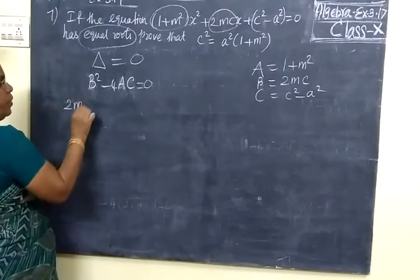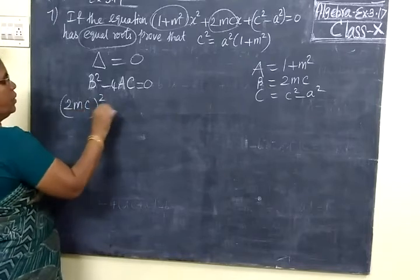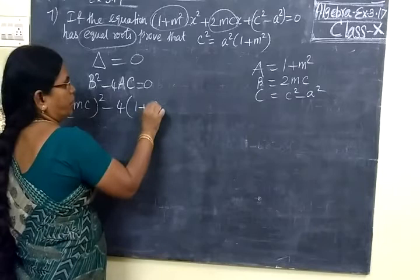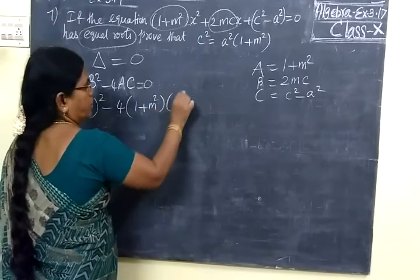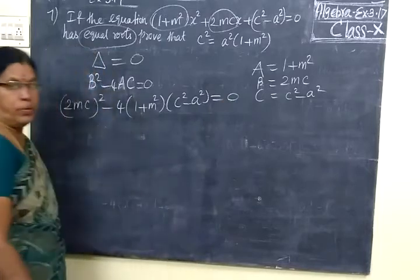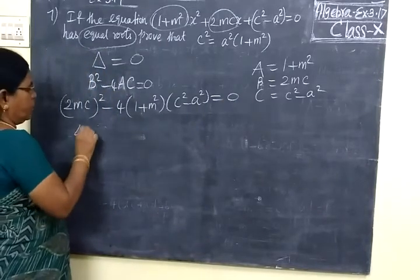2MC whole square minus 4 into A is 1 plus M², C² minus A² is equal to 0. So if you expand this,